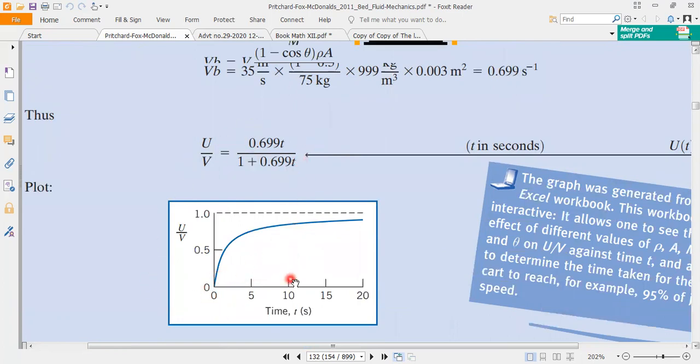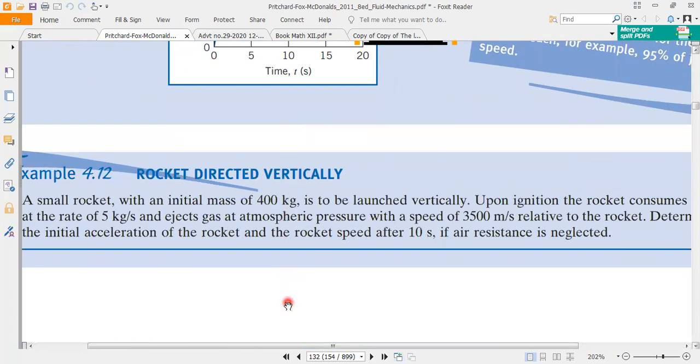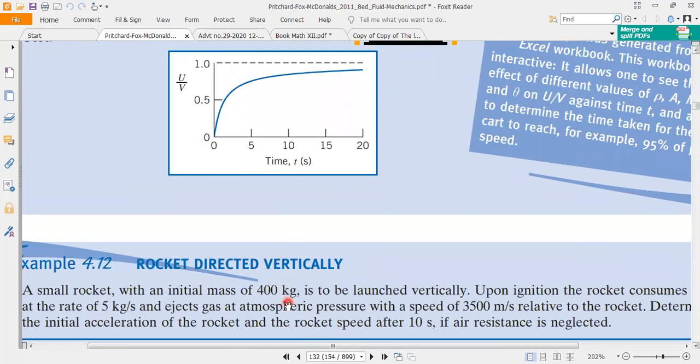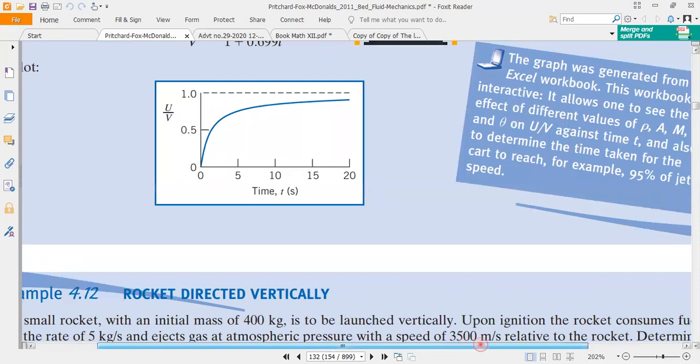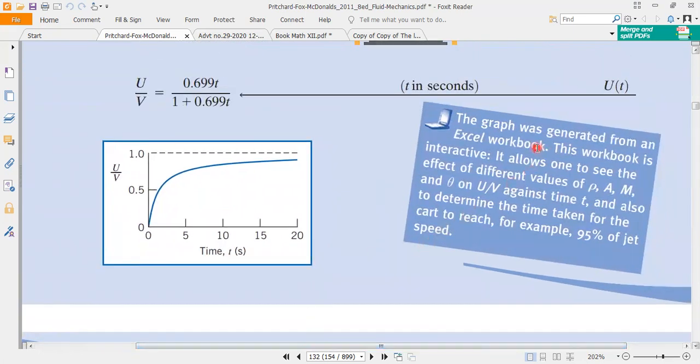And then we have to add the graph to the different values. This graph is made. So we have to add the graph here. So even jet speed to reach, how many times after 20 seconds or 15 seconds? So the time will be how much it will be to 95% of jet speed to reach its cart speed.